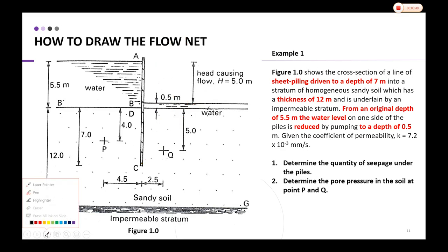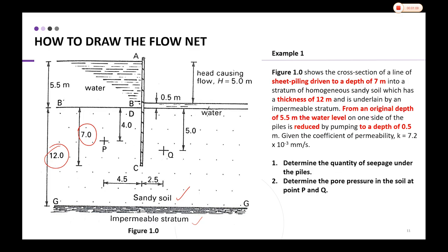The sheet pile is driven to a depth of 7 meters into a stratum of homogeneous sandy soil. This sandy soil layer has a thickness of 12 meters and is underlain by an impermeable stratum. The original upstream water level is 5.5 meters, and on one side of the pile it is reduced by pumping to a depth of 0.5 meters. So the head difference h is equal to 5.5 minus 0.5, which gives h = 5 meters.